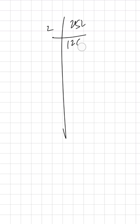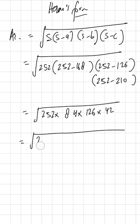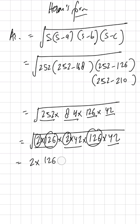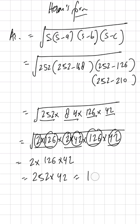Now we write the factors under the square root: 252 = 2 × 126, and 84 = 2 × 42. So we have √(2 × 126 × 2 × 42 × 126 × 42). Pairing up: 2 × 2 comes out as 2, 126 × 126 comes out as 126, and 42 × 42 comes out as 42. Multiplying: 2 × 126 × 42 = 10584 meters squared. This matches the earlier result, so the area is verified using Heron's formula.